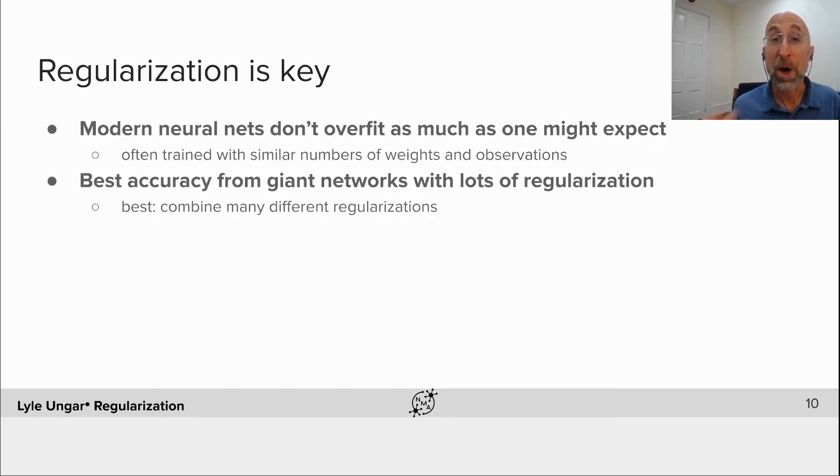So the key to all of this: regularization, penalties, methods to control the complexity. Again, what we will see is modern neural nets should overfit incredibly because they have often more parameters in them than training observations, but they don't do as badly as you might think. We'll see why. And if you want to do really well on these giant networks, you need to do lots of regularization.